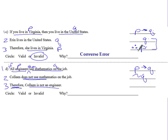If Colleen does not use mathematics on the job, can I conclude that Colleen is not an engineer? Sorry, I keep forgetting my dots. Therefore, Colleen is not an engineer. So if I don't use mathematics, is it safe to conclude I'm not an engineer? Yes, it is. Why? It's the law of contrapositive. Notice P, Q became not Q, not P. That's switch and negate. Law of contrapositives.